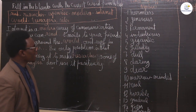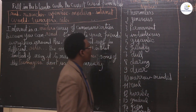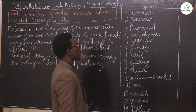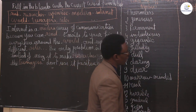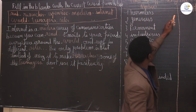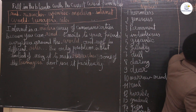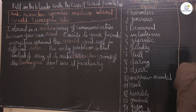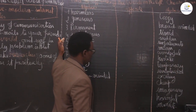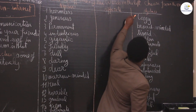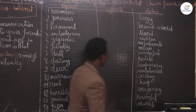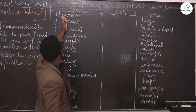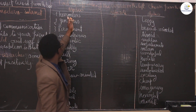The second exercise is matching. Find the opposite of the adjectives. Find the opposite of the word on the left and choose from the words on the right. For example, what is the opposite of harmless?